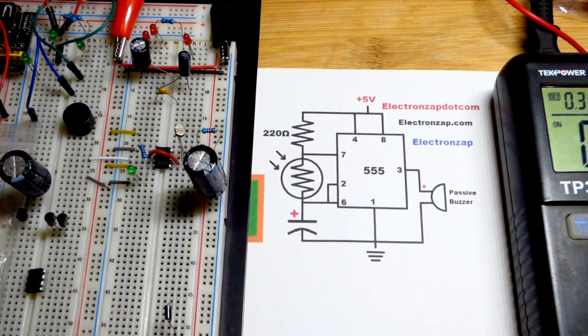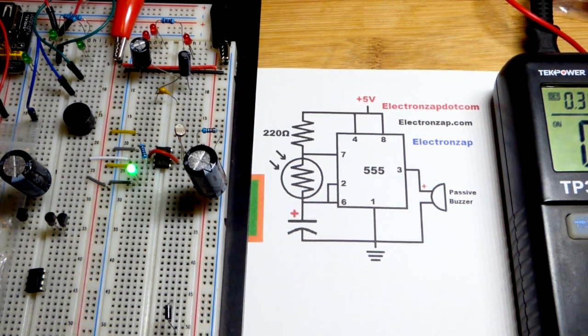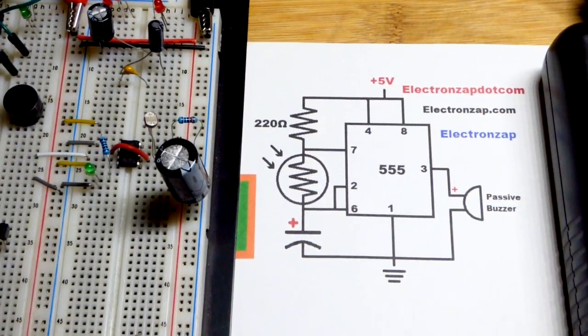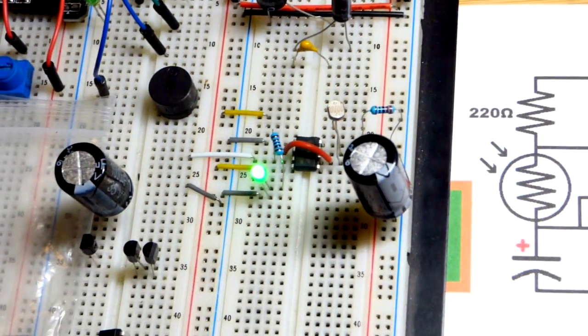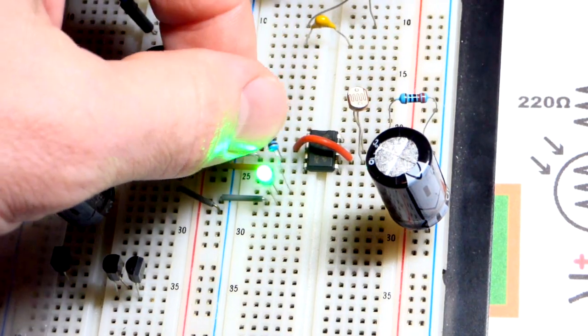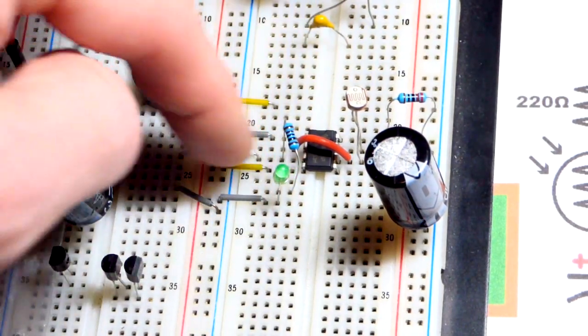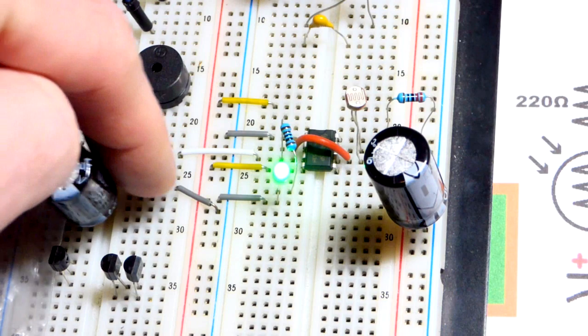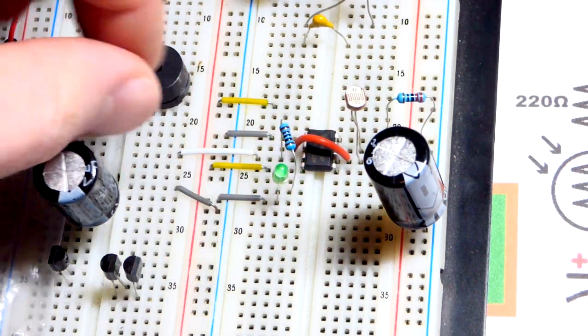So now as I said before we're focused on the passive buzzer. What I'm going to do is at the output pin number three of the 555 timer right there that's powering the LED, I also have this white jumper that comes there and then a gray jumper that goes to ground.